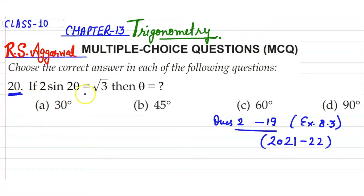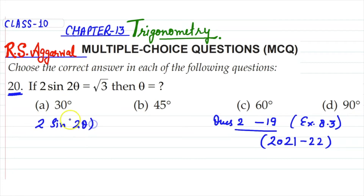In the first question, I will explain all the concepts. We are given 2 sin 2θ equals root 3 — that means the angle is doubled. We have to find the value of theta here.